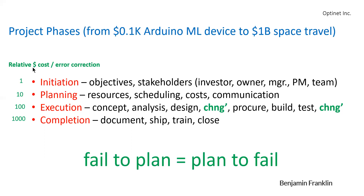The relative dollar cost per error correction in any one of these phases goes up exponentially. If it costs a dollar to make a change in the initiation phase, it will be $1,000 when you make the change once you've completed the job. Planning is the key to success — failing to plan is planning to fail, according to Benjamin Franklin, which is very true today.